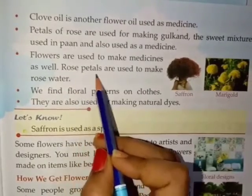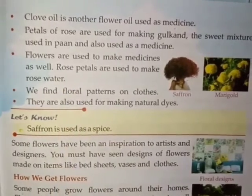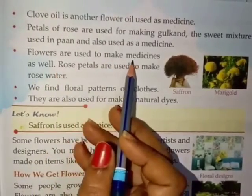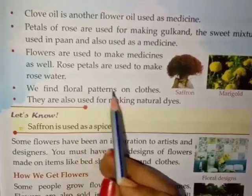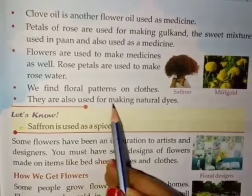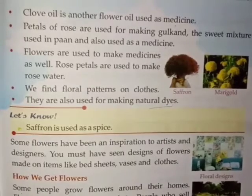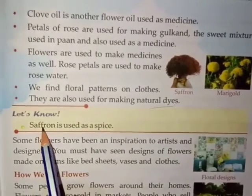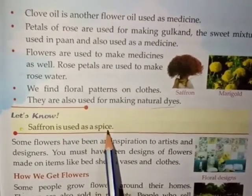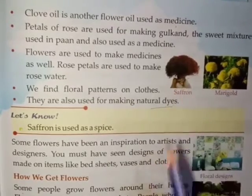For example, rose petals are used to make rose water. Rose water makes skin glow and can be used in different ways as a medicine too. We find floral patterns on clothes. They are also used for making natural dyes to color different things. Saffron is also a flower used as a spice in food.